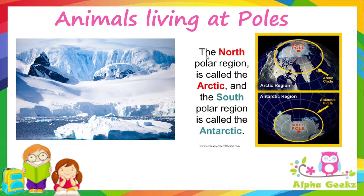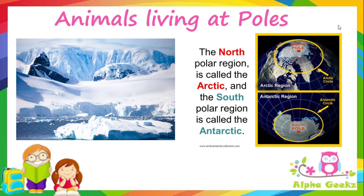Animals living at poles: the poles are at the top and bottom of the earth. The North Pole is the northernmost point of the earth and is in the Arctic Ocean, while the South Pole is the southernmost point and is in the Antarctic region. The Arctic is an ocean surrounded by land, while Antarctica is land surrounded by ocean on all sides. It is very cold and full of snow at the poles, as these regions receive very little direct sunlight, and therefore very few animals can be seen there.